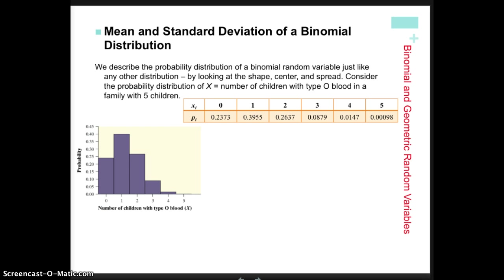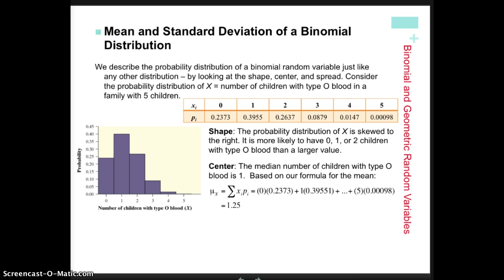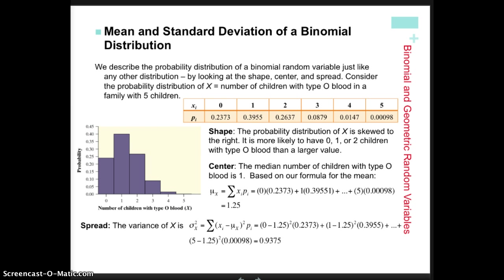Calculating the mean and standard deviation of a binomial distribution is similar to what we did in section 6.1, where we used a weighted average for discrete random variables. Once we calculate the mean and standard deviation, we're also interested in shape, center, and spread as we learned in chapter 1. To calculate the standard deviation, we go through variance first and then take the square root. Pause this video if you would like to write these down.